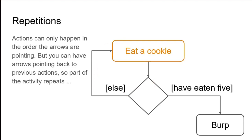So I eat a cookie, then I make a decision: if I have eaten five, I burp. But else — and you can always use 'else' as the other option for a simple decision like this — I eat a cookie again, check if I've eaten five, and eat one again, and again, and again. And that was five, so I burp. You might notice how this pattern could also be used in a game where you have to collect a certain number of keys to continue to the next level, or where you get a game over when you have lost a certain number of lives.